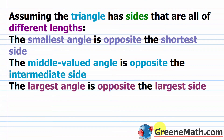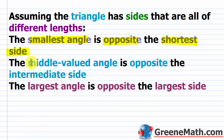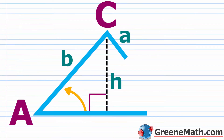A few more things about triangles: assuming all sides are different lengths, the smallest angle is opposite the shortest side, the middle-valued angle is opposite the intermediate side, and the largest angle is opposite the largest side. Keep this in mind — it's going to come up today. Now let's jump into examples covering all the different scenarios.